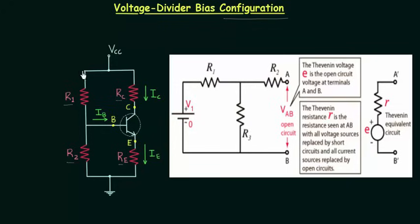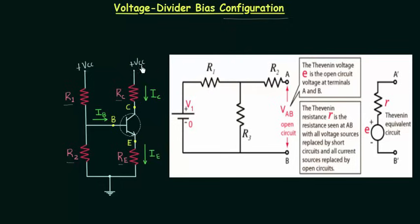In this circuit, the potential at this point is equal to Vcc, and the potential at this other point is also equal to Vcc. We can modify this circuit so that potential at one point is plus Vcc and at the other point is also plus Vcc. First we will find out the operating point in the case of voltage divider configuration, and after this I will explain why we prefer it. In order to calculate the operating point, we must draw the equivalent circuit using Thevenin's theorem.